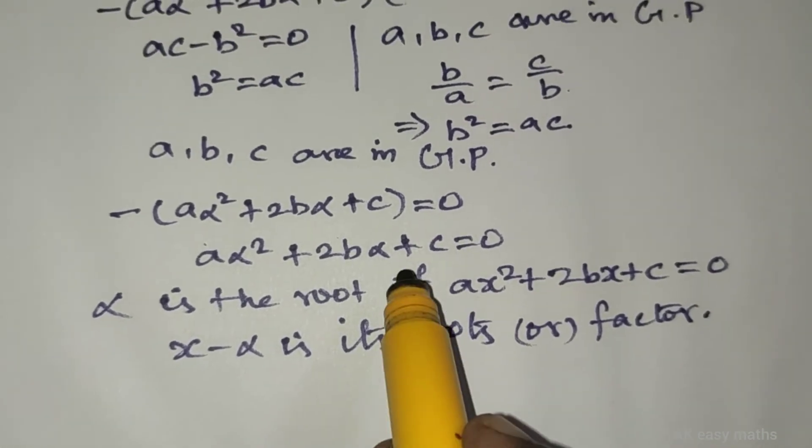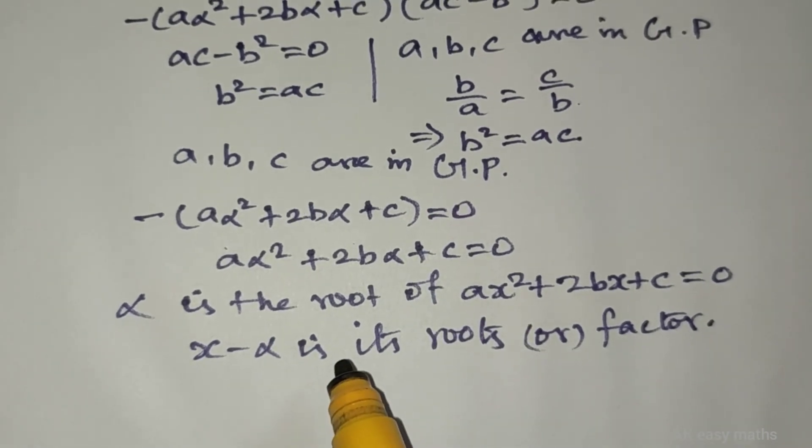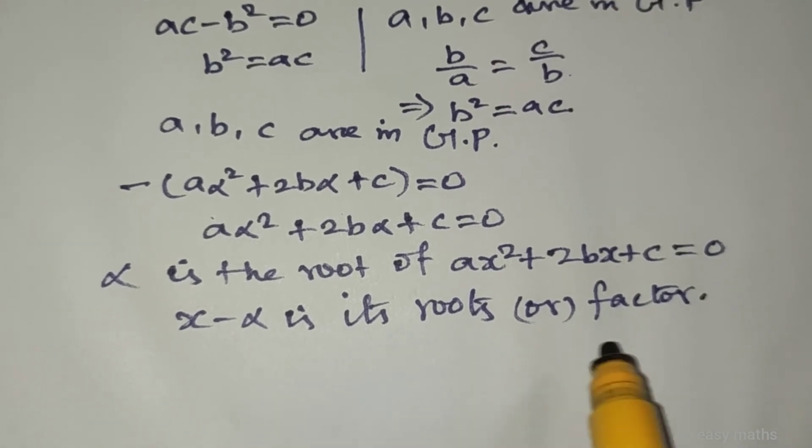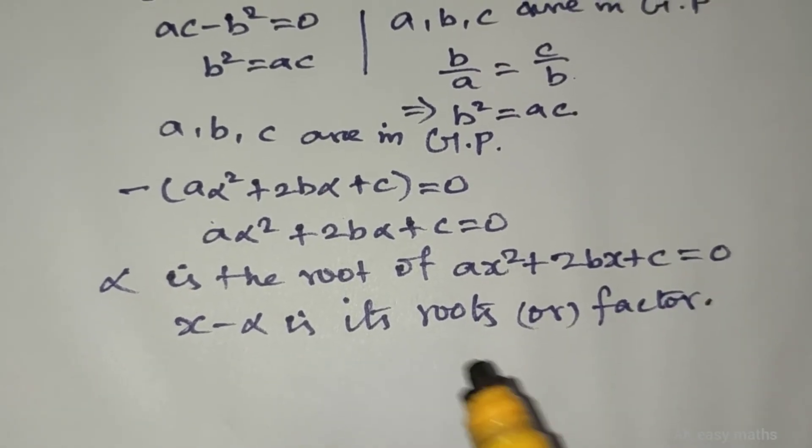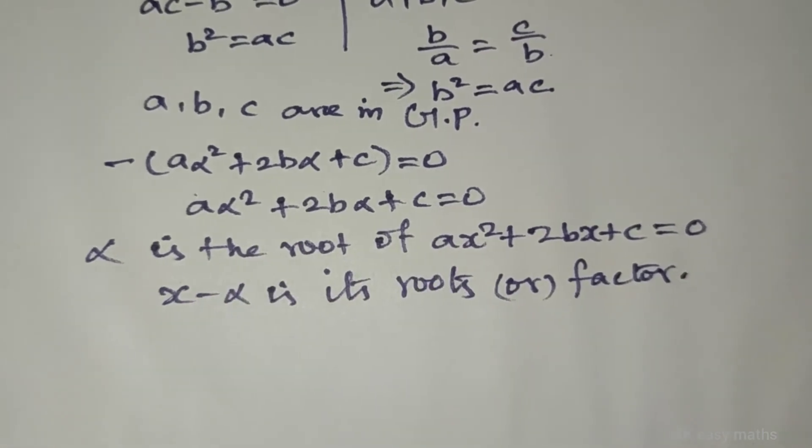We have proved that a, b, c are in GP, and also proved that alpha is the root of ax squared plus 2bx plus c equal to 0. Thank you students.